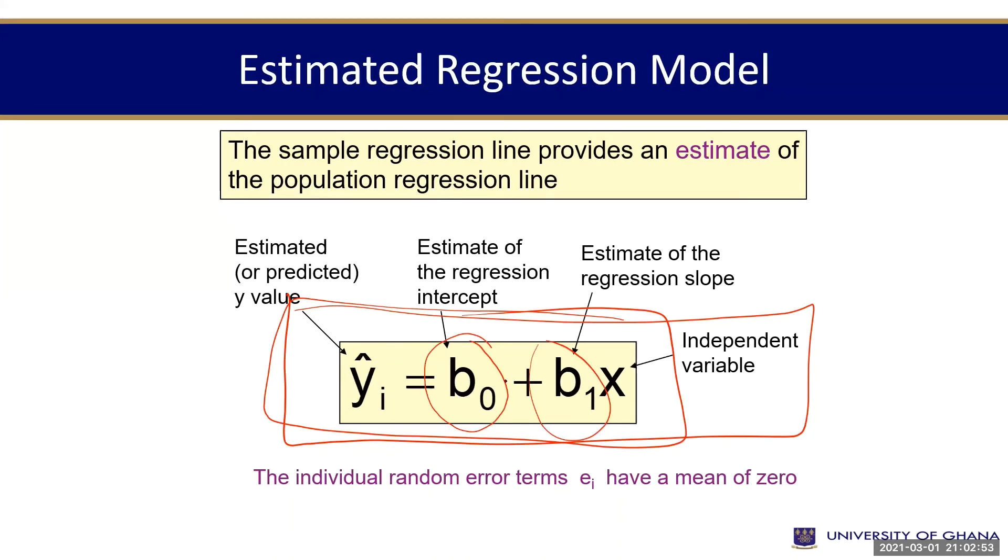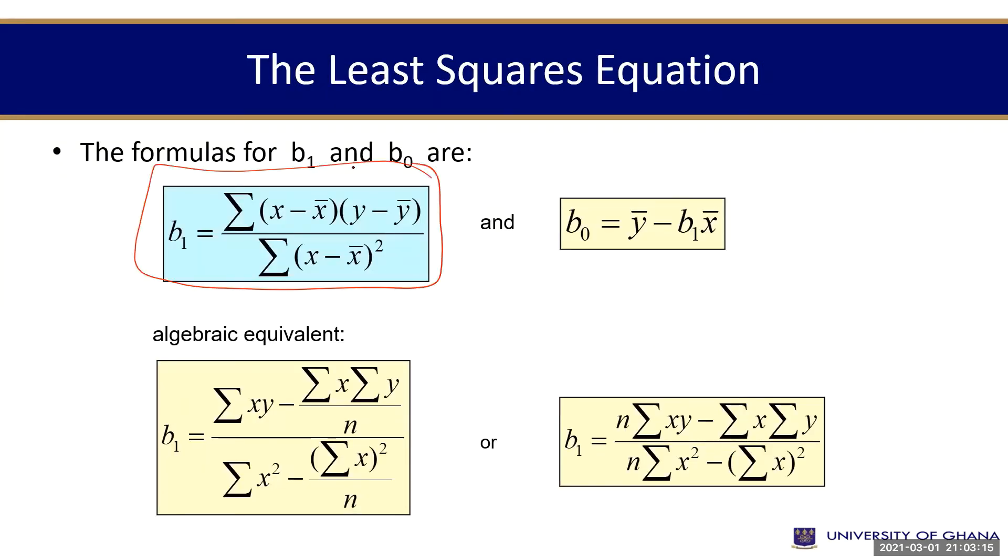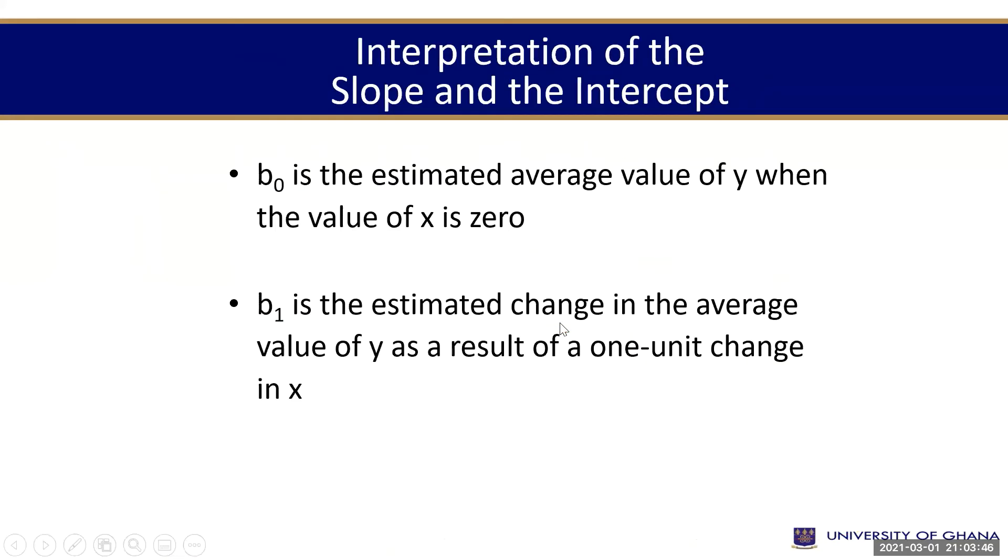Please note this. How to compute B0 and B1. How do we estimate the regression intercept? And how do we also estimate the regression slope? As for X, X will be given to us. And to find Y, Y is dependent on what you get for B0 and B1. This is how to compute B1 and B0. Remember, we've already talked about X bar and Y bar. And X minus X bar, Y minus Y bar. We've talked about this. Then, B0. We know Y bar. If we find B1 and we also know X bar, we should be able to calculate what? Beta naught. And this one is the algebraic equivalent.